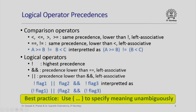Among the logical operators, negation (!) has the highest precedence, then binary AND (&&), then binary OR (||). Both && and || are left-associative. For example, in the expression flag2 && !flag3 || !flag1, we first evaluate !flag1 and !flag3 (negation, highest precedence), then flag2 && !flag3 (AND, next), and finally OR (lowest precedence). As with arithmetic expressions, the best practice is to use parentheses to specify meaning unambiguously.